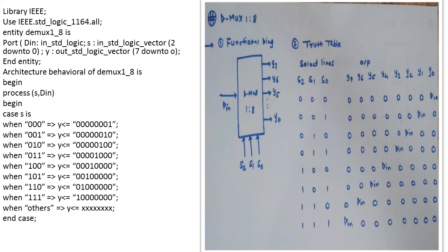Finally we will end first the case statement which we have analyzed. Then we will end the process and end the architecture. So here end the process and end the architecture. So this is going to be VHDL code for 1 is to 8 demultiplexer using case statements. I hope you understood the concept. Thank you very much.